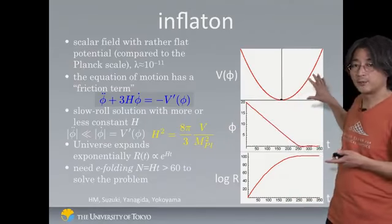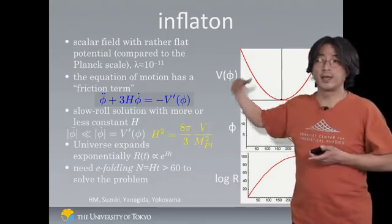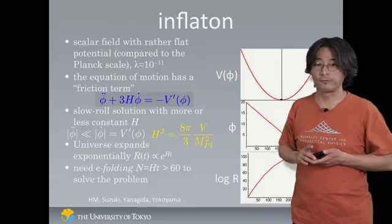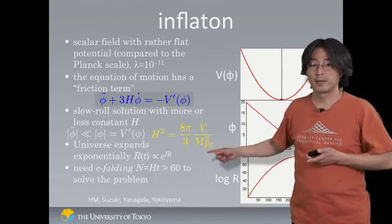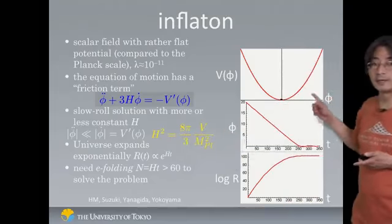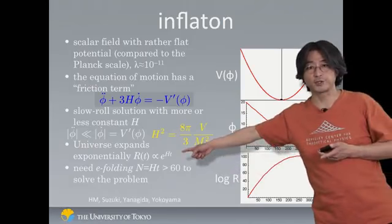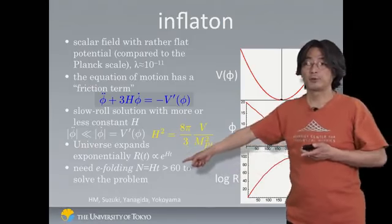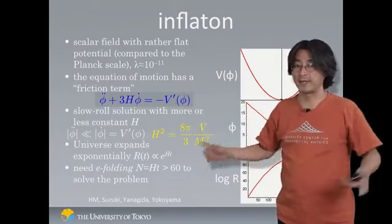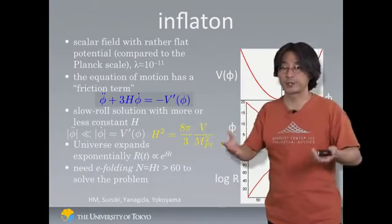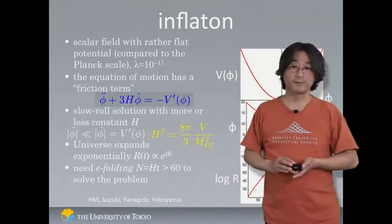So energy density remains more or less constant. And if you put those equations together, this equation and the Friedman equation we talked about a few minutes ago, then you'll find this result, that energy density is just given by this height of the potential, and the universe expands exponentially.